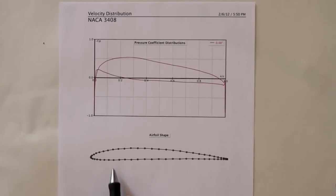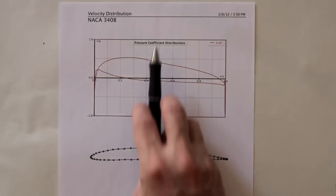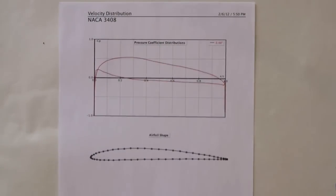When we look at this airfoil, the pressure generally will be higher on the bottom than it is on the top, and the result will give us some lift in the vertical direction.